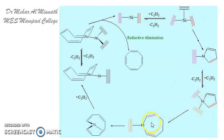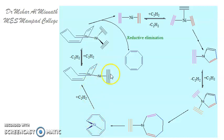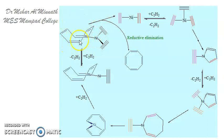This acetylene also then goes into the ring, and you get a nine-membered ring with eight carbon atoms and nickel as the ninth. You add one more acetylene; it gets coordinated to the nickel, and then followed by reductive elimination wherein the nickel group is removed and you get cyclooctatetraene.